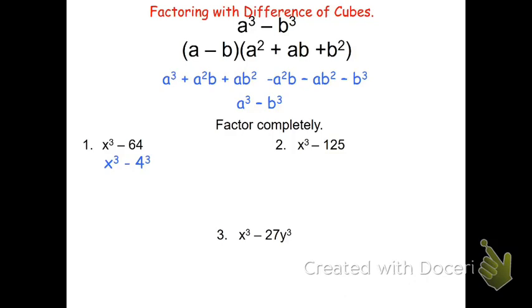In this pattern, x would be the a and 4 is the b. So now I can just substitute it in. Instead of a - b, the first quantity is going to be (x - 4) times (x² + 4x + 4²).